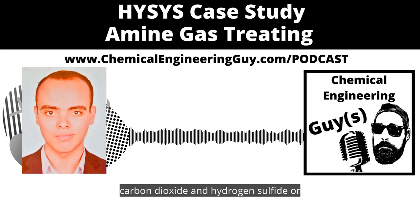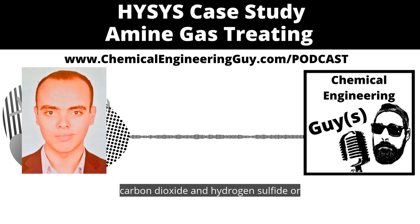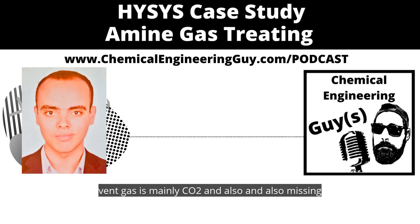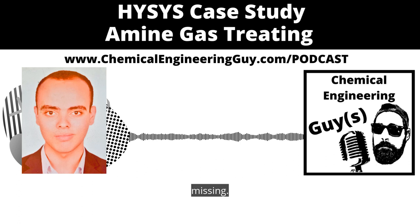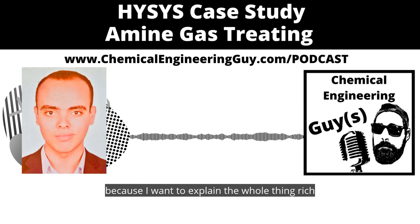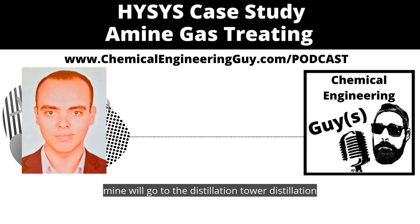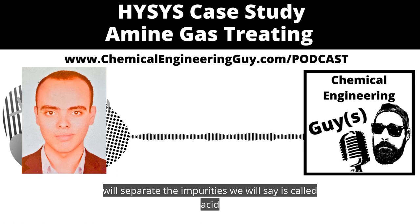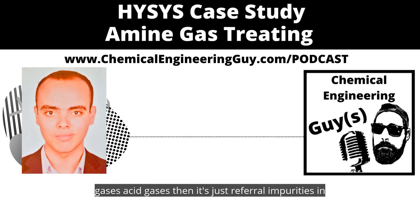The vent gas is mainly CO2 and also methane. The rich amine will then go to a heat exchanger — I'll talk about that exchanger later once I explain the whole picture. Then the rich amine will go to the distillation tower. Distillation will separate the impurities, which we call acid gases — a term used to refer to the impurities in the amine.